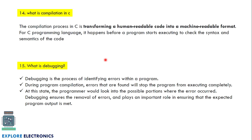What is debugging? After compilation, if errors are found, debugging is the process of identifying those errors within a program and correcting them. Errors found during compilation will stop the program from executing completely. As a programmer, you look into the portion where the error occurred. Debugging ensures the removal of errors — we are digging into the code to find where the error occurred. Once errors are cleared, the program executes and we can expect the output.